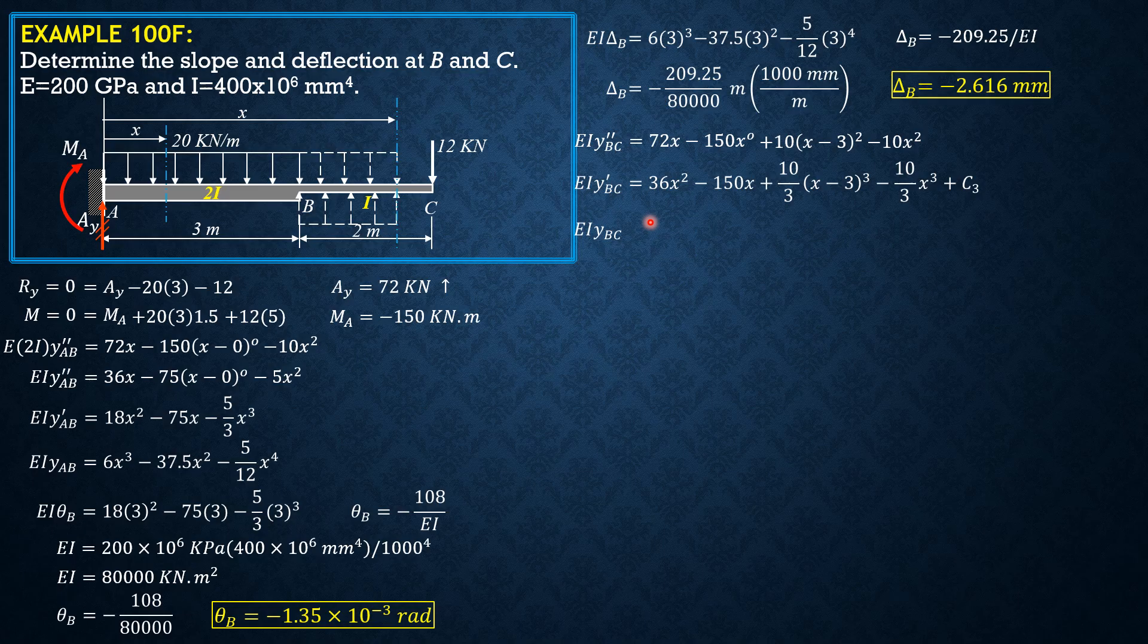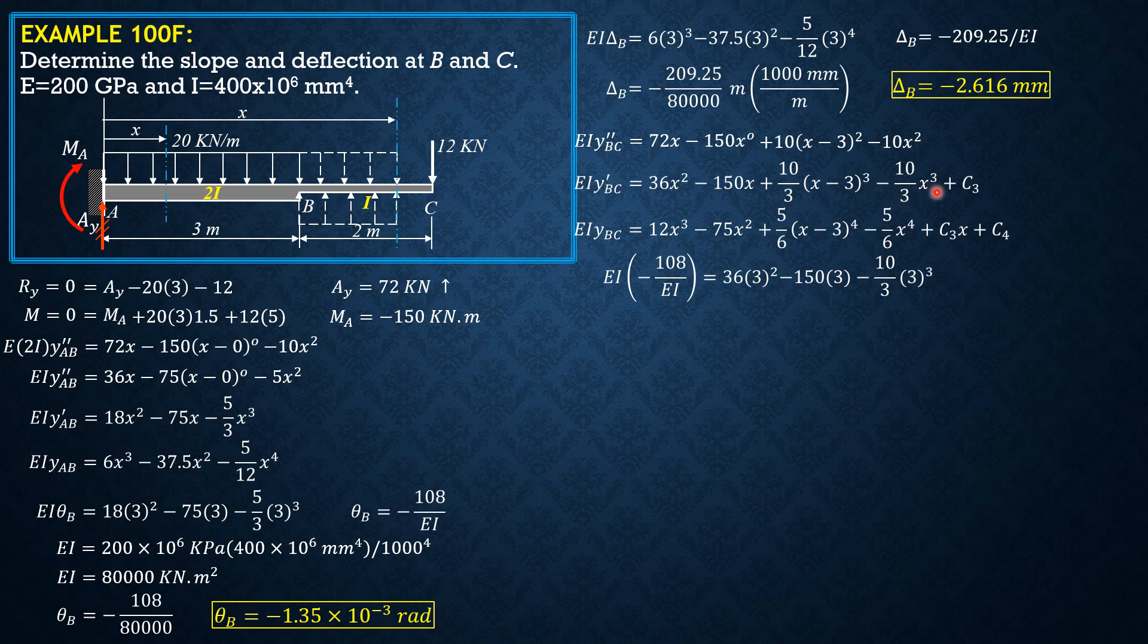Then integrating again, EI YBC equals 12 X cubed minus 75 X squared plus 5 over 6 X minus 3 to the 4th minus 5 over 6 X to the 4th plus C sub 3 times X plus C sub 4.